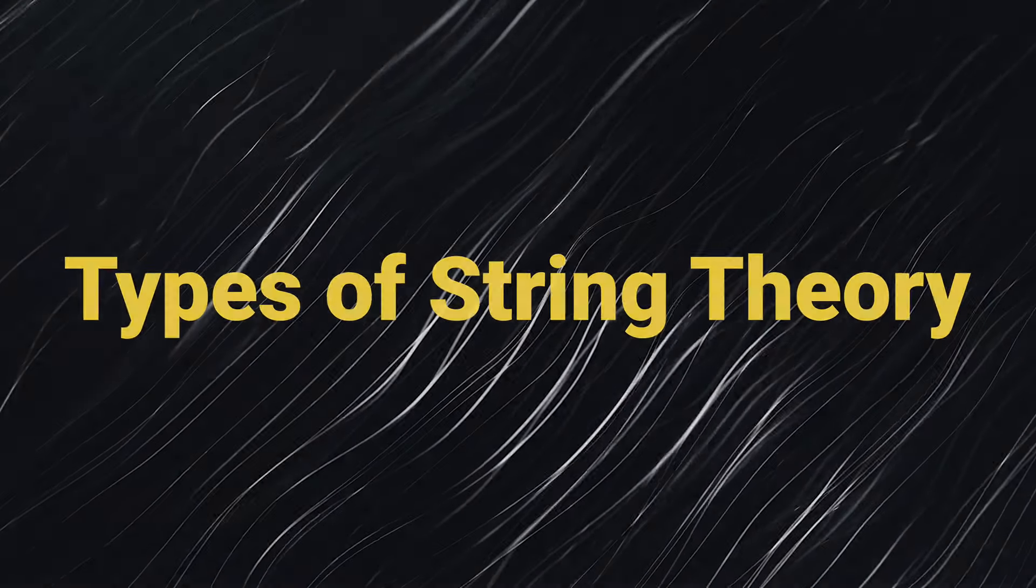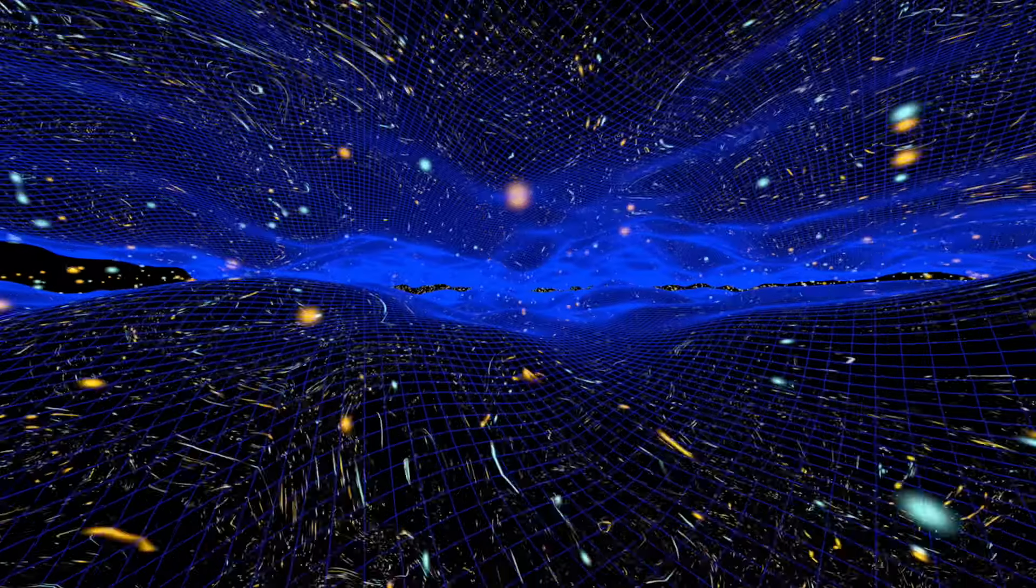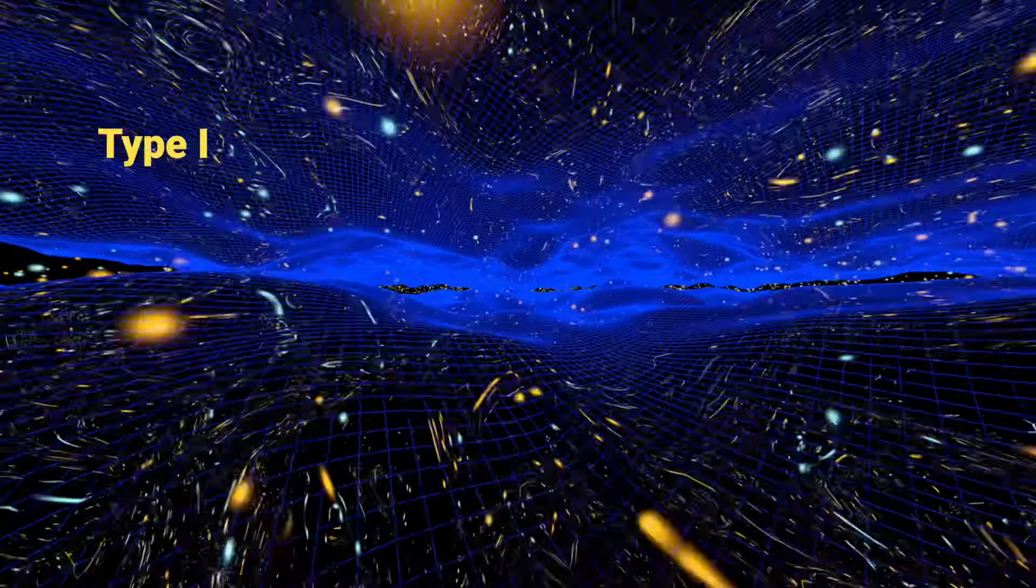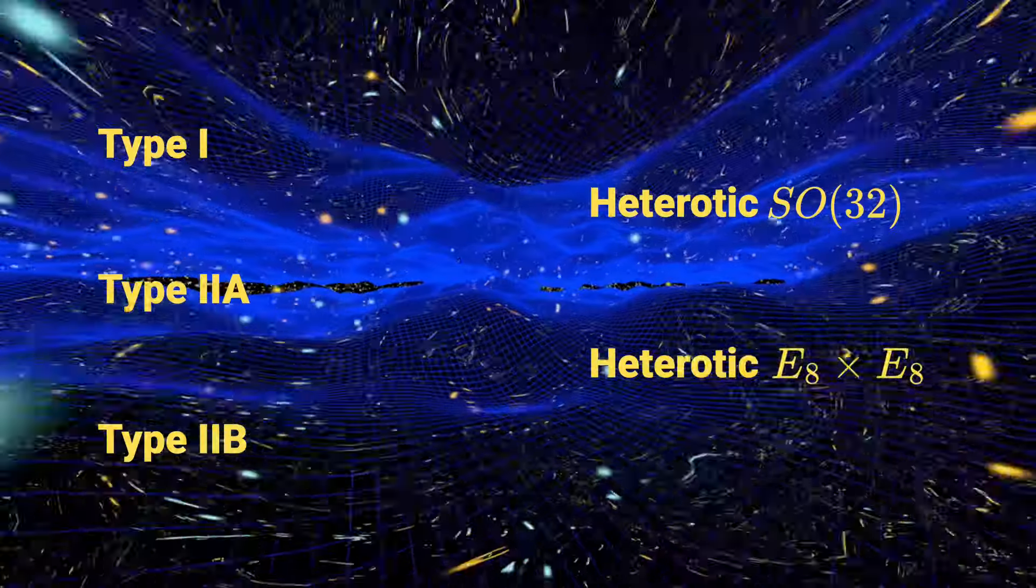Types of String Theory. In string theory, there are five so-called consistent formulations or flavors. There's type 1, there's type 2a, type 2b, heterotic SO32, and heterotic E8 cross E8.